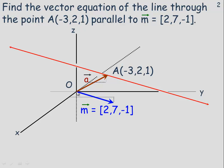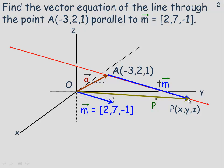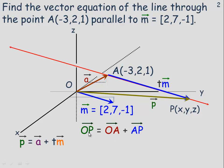I'm going to draw on the diagram a vector that goes from the origin (0, 0, 0) to the point negative 3, 2, 1 — I'll call it vector OA, or little vector a. I'll also construct a vector parallel to the line, parallel to the direction vector, called tm, which means some scalar multiple of vector m. One more construction: a vector from O to an arbitrary point P with coordinates x, y, z, so OP is the vector x, y, z. According to the triangle law, vector OP equals OA plus AP, where AP is the vector tm.